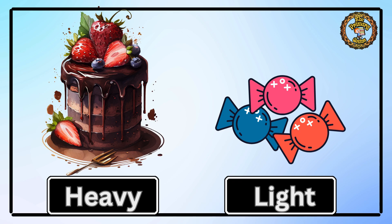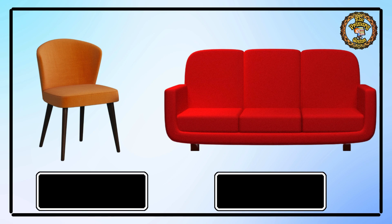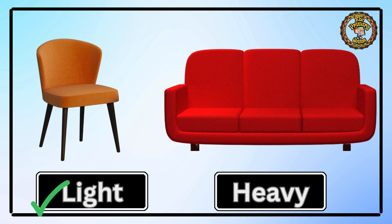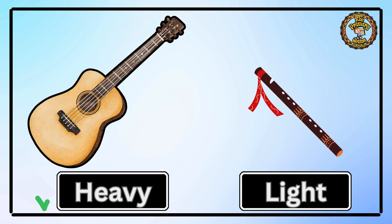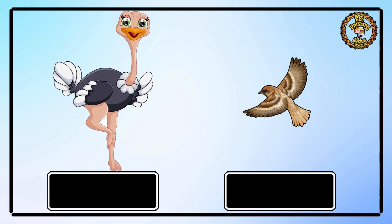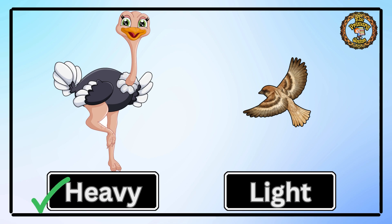Then comes a chair and a sofa. Tell me which one is light? Yes, the chair is lighter than the sofa. We have a guitar and a flute — tell me which one is heavy? Yes, the guitar is heavier than the flute. At last, we have an ostrich and a sparrow. Tell me which one is heavy? Yes, the ostrich is heavy and the sparrow is light.